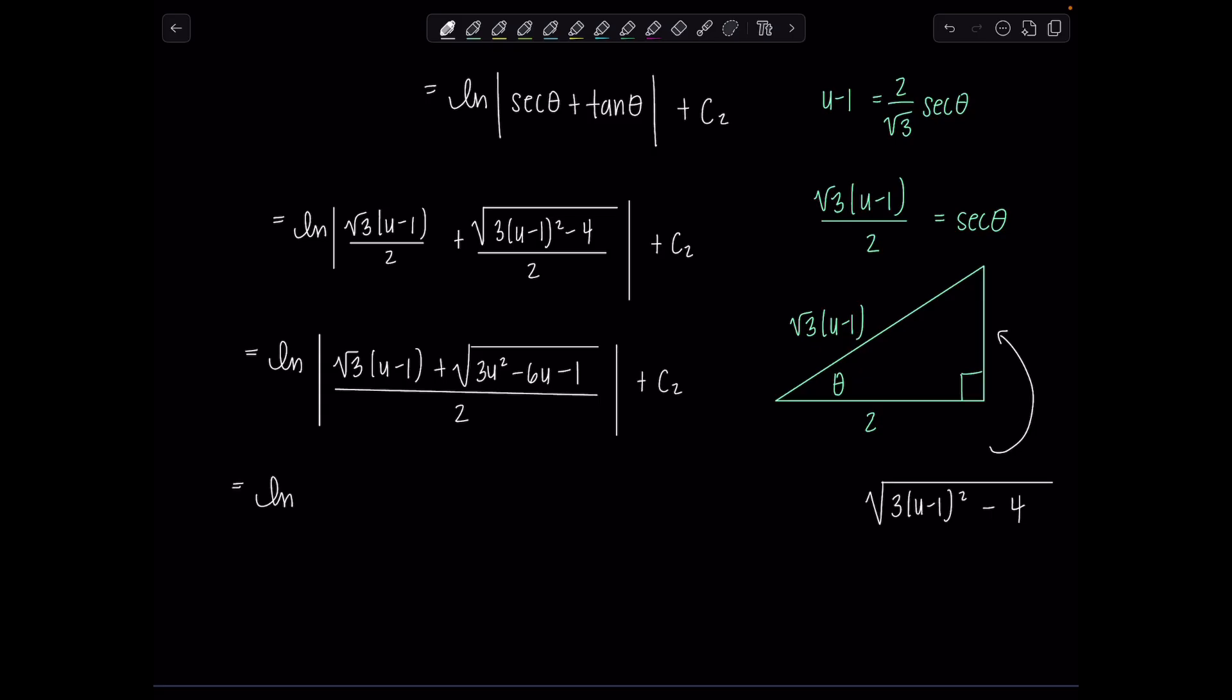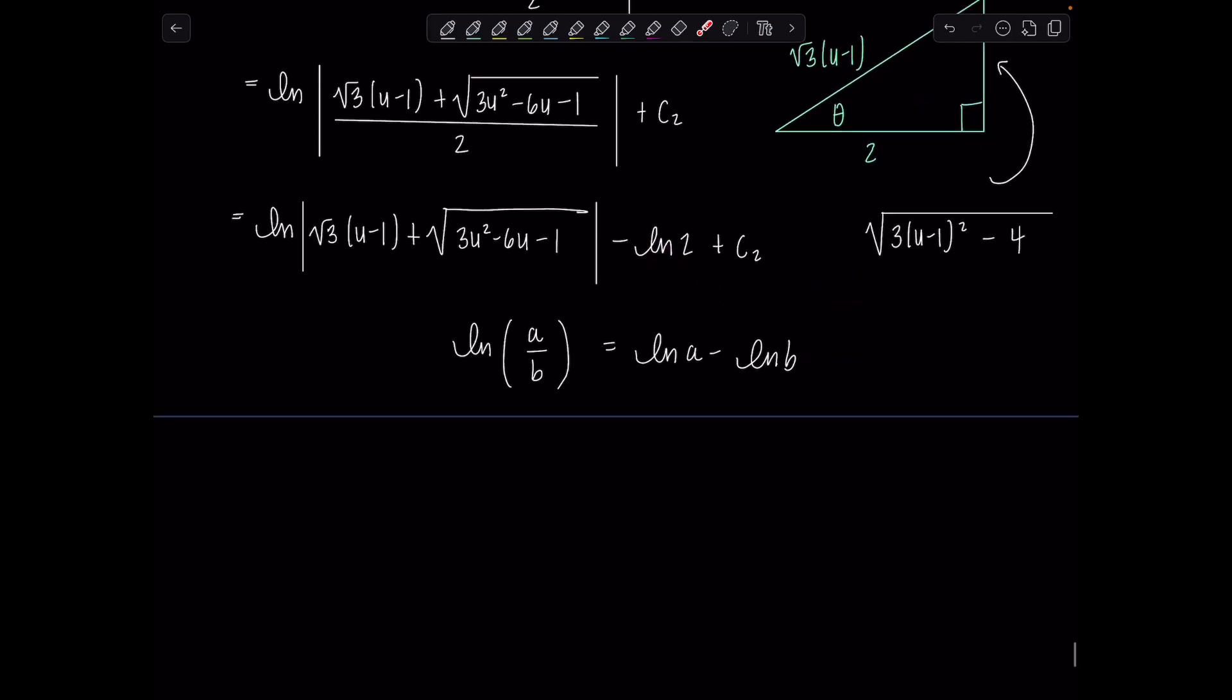But then this is really ln absolute value rad 3 times u minus 1 plus radical 3u squared minus 6u minus 1, minus natural log of 2 plus c2, right? Because when you have natural log a divided by b, that's ln of a minus ln of b. So this is b. And then ln of 2 is nothing more than a constant that can get absorbed with this plus c2. You just have to rename it. So now it's ln absolute value rad 3 times u minus 1 plus square root 3u squared minus 6u minus 1 plus c3, where c3 is c2 minus natural log of 2.